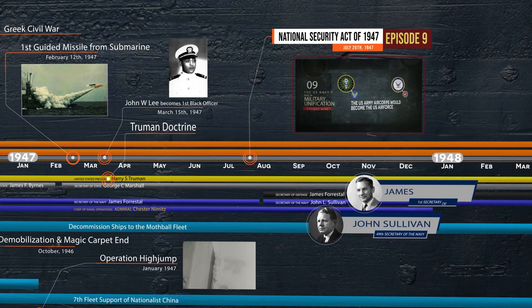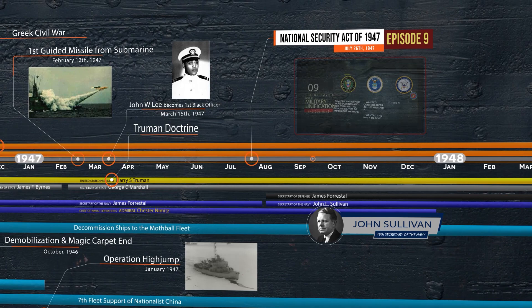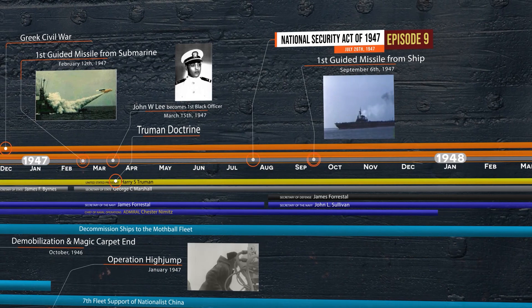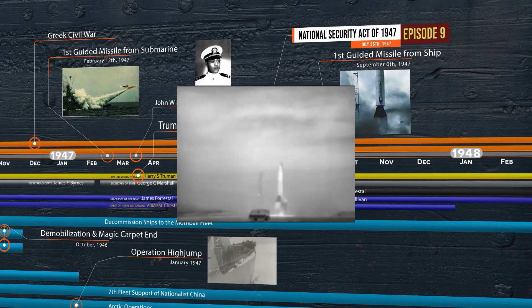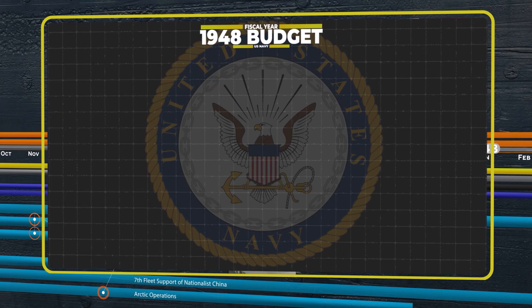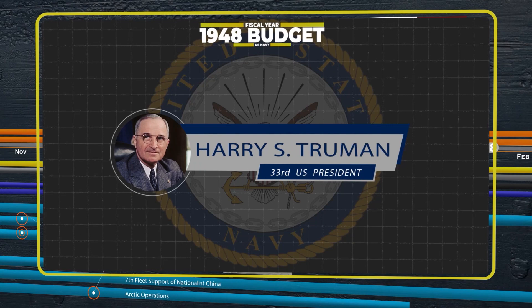The first launch of a guided rocket from a U.S. Navy ship took place on the deck of the USS Midway in Operation Sandy. October saw the beginning of the Navy's fiscal year 1948 budget. President Truman's focus at the time was to balance the federal budget, and in his mind, the military was the most effective place to trim that budget. This saw the Naval budget begin to dwindle.